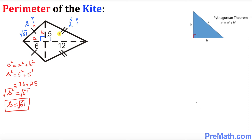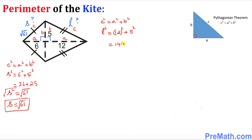Now let's apply the Pythagorean theorem to the right-hand side right triangle. Again, I'll call this side 'a', this side 'b', and the hypotenuse 'c'. So c squared equals a squared plus b squared. In our case, c is l, so l squared equals 12 squared plus 5 squared, which is 144 plus 25, making 169. Taking the square root on both sides, l turns out to be 13.